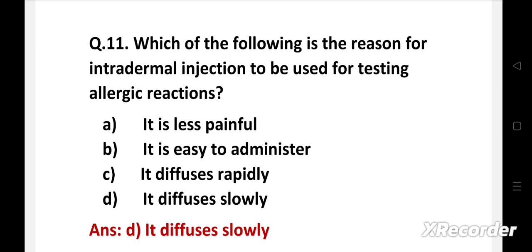Right answer is option D: It diffuses slowly. The test for allergy requires the medicine to get absorbed slowly. It can result in serious anaphylaxis, so it is given through intradermal route as the blood supply in this layer is less, which delays absorption. Additionally, the body's reaction to substances is more easily visible since it is closer to the surface. The layer underneath the epidermis contains a large number of immune cells, mainly dermal dendritic cells.